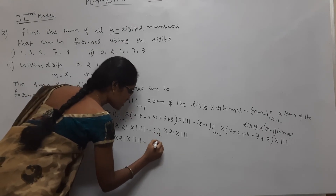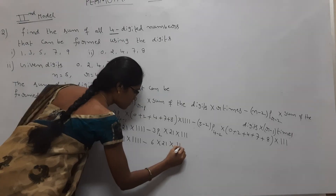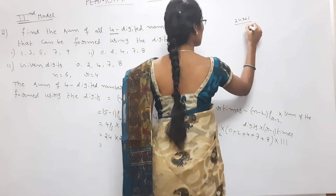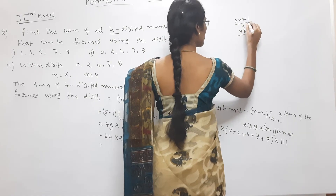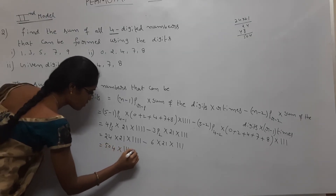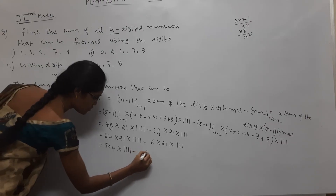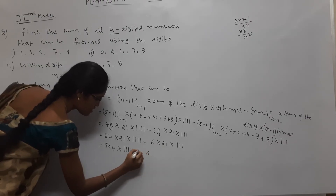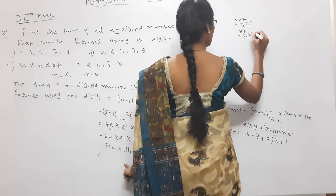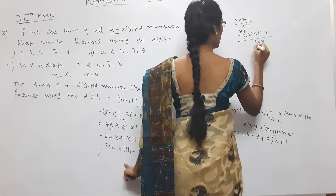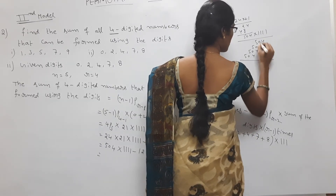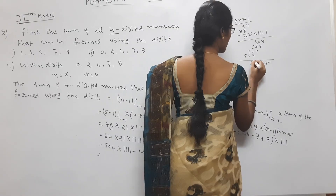Next, 3P2 = 3×2 = 6. So 6 into 21 = 126. The first term: 504 into 1111, and the second term: 126 into 111. So the answer is 504 × 1111 minus 126 × 111.